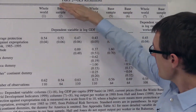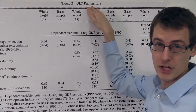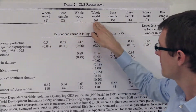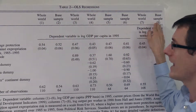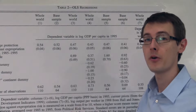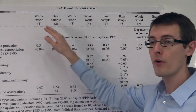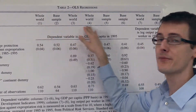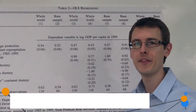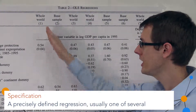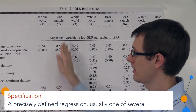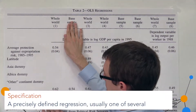So the title is OLS Regressions. Here I've got 1, 2, 3, 4, 5, 6, 7, 8 different regressions — or these are called specifications — the different ways of looking at the data. So each one of these is a regression.